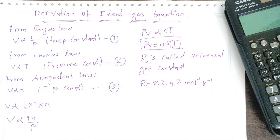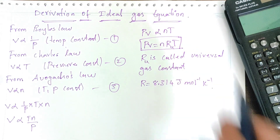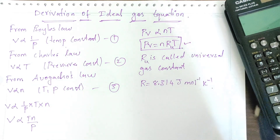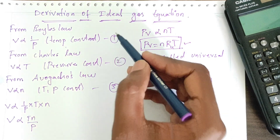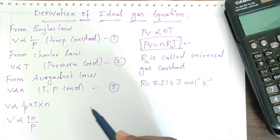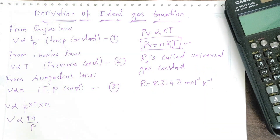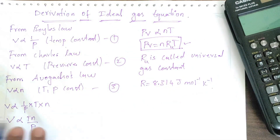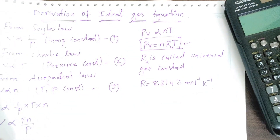So PV = NRT is our ideal gas equation, derived from these three laws. We will now see some other forms of the ideal gas equation, which are very important for the exam.